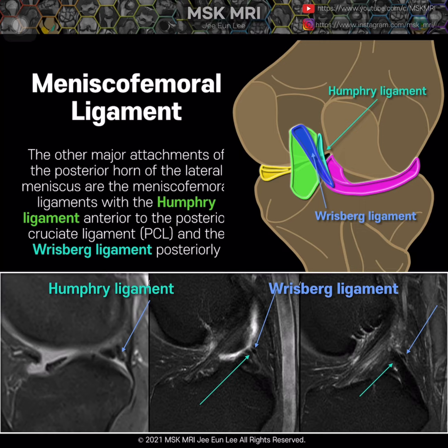Here, Humphrey ligament — the postural aspect of the PCL genu portion — and this is Wrisberg ligament.